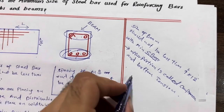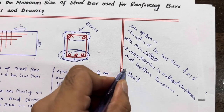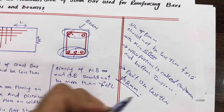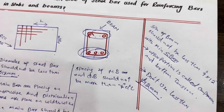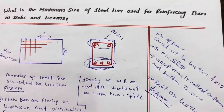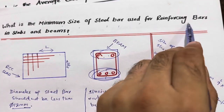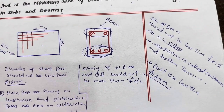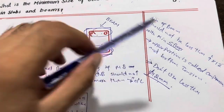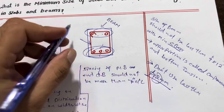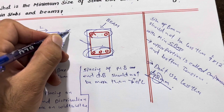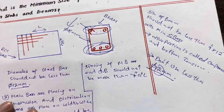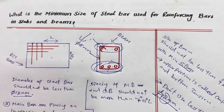Remember, the same rule applies for the beam — don't use less than 12 millimeters. This is the minimum diameter for a plinth beam or floor beam. Also, when you are using 12 millimeter main bars, the tie bar diameter should be a minimum of eight millimeters. Thanks for watching — see you in the next video, goodbye.